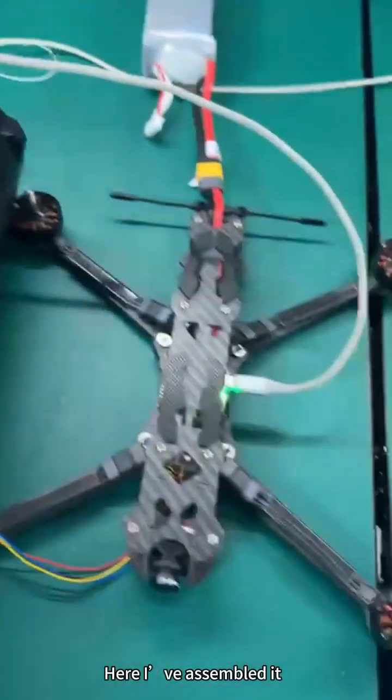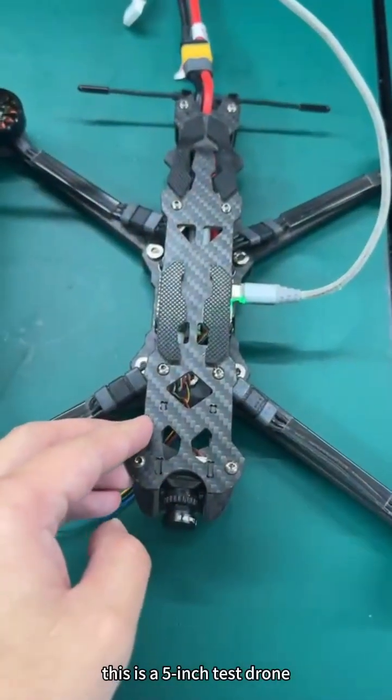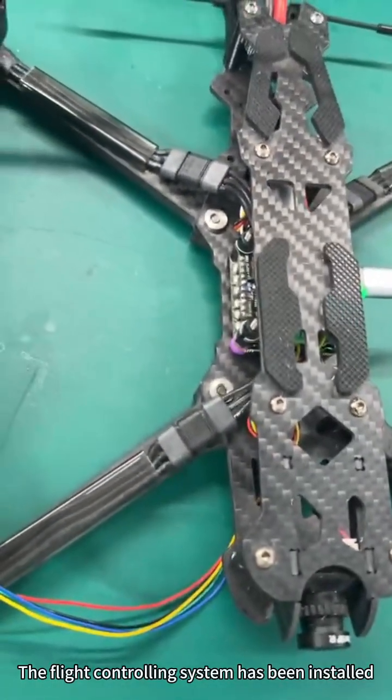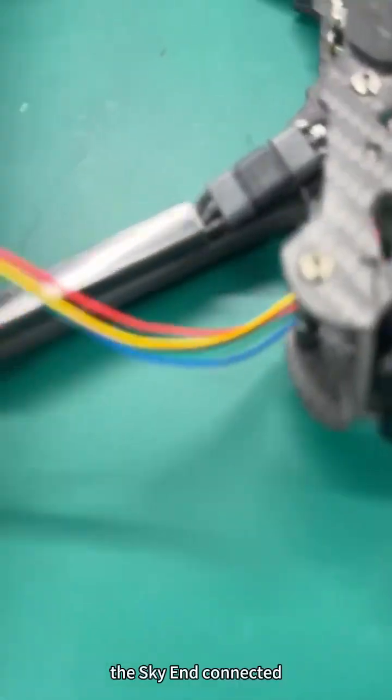Here I've assembled it. This is a 5-inch test drone. The flight controlling system has been installed and the sky end connected.